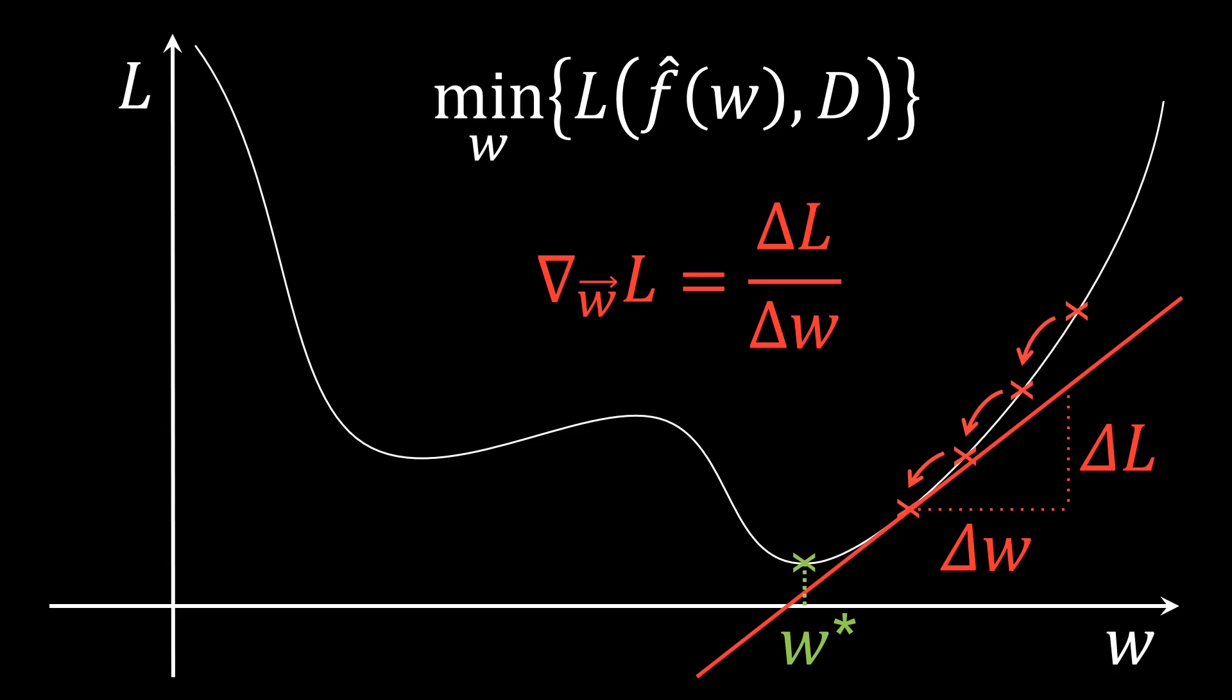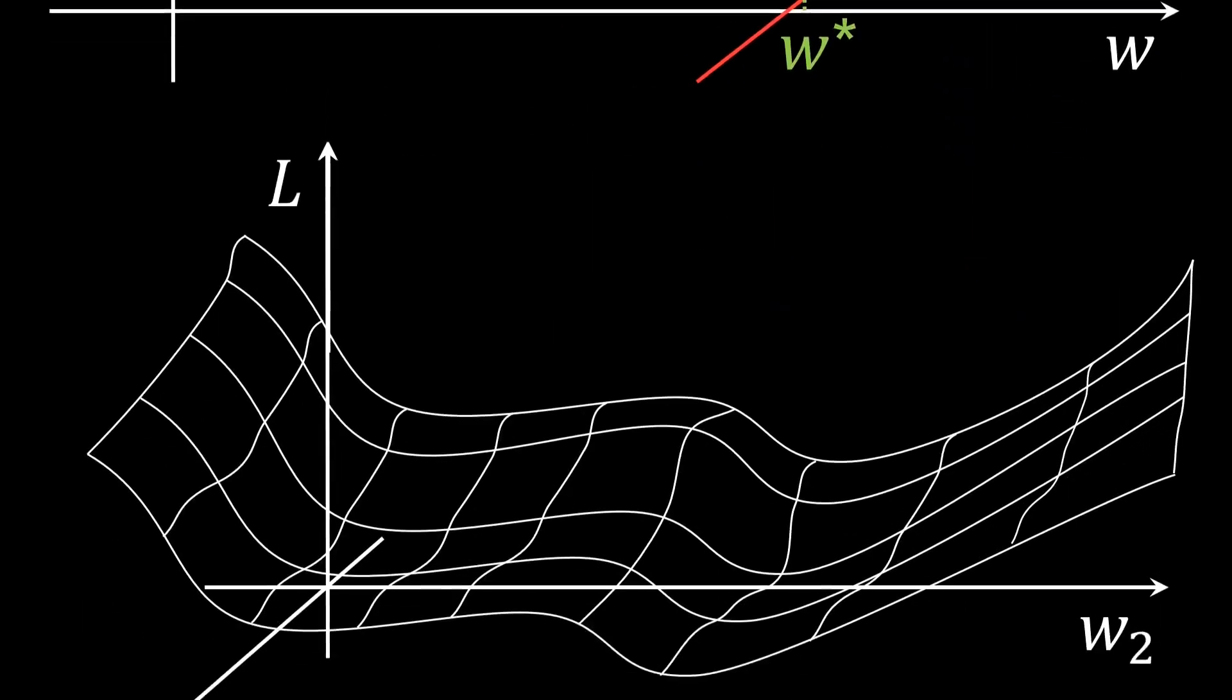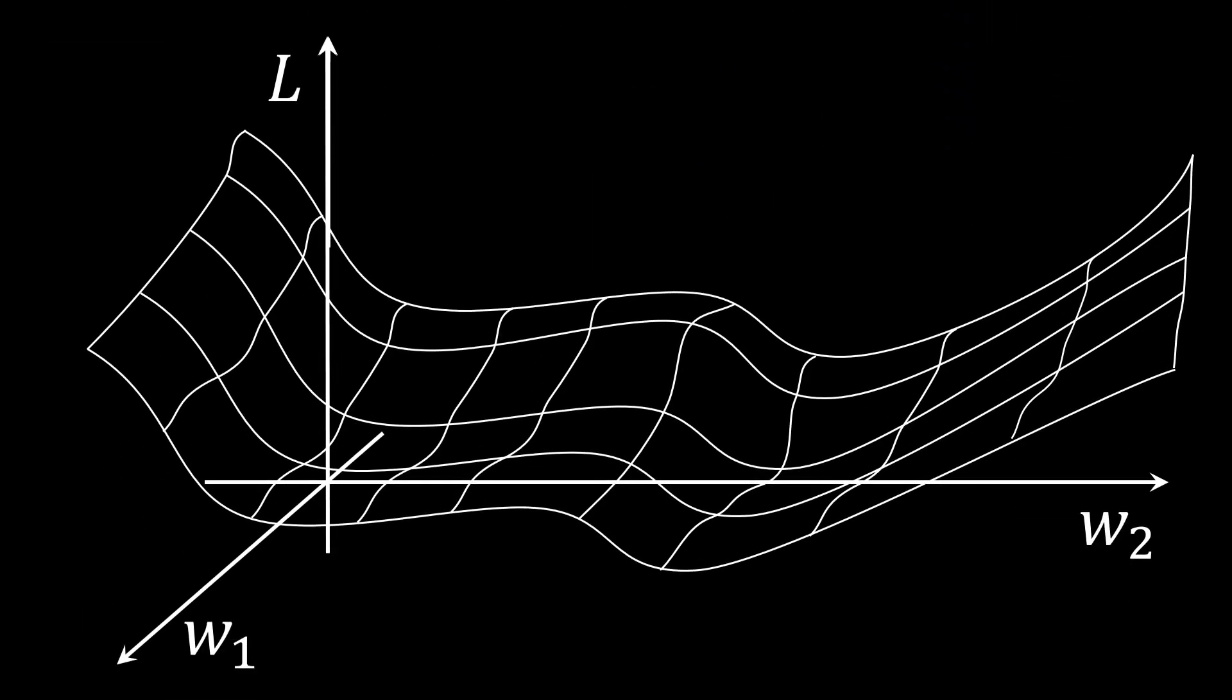If the weight is not just a single value, but a whole vector, then we can look analogously at the multidimensional loss surface. Here, the gradient at a given point points in the direction of the steepest ascent, that is, the direction in which the loss increases the most.